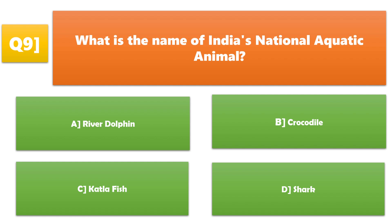What is the name of India's national aquatic animal? A. River dolphin, B. Crocodile, C. Katla fish, D. Shark. A. River dolphin is the correct answer.